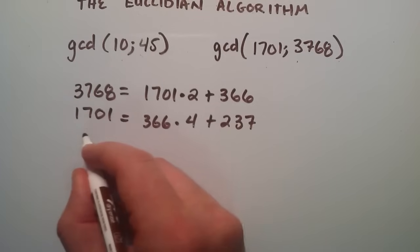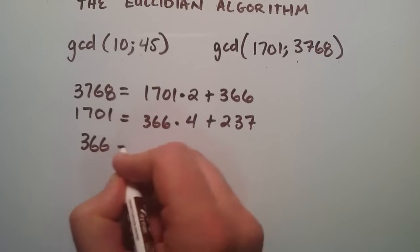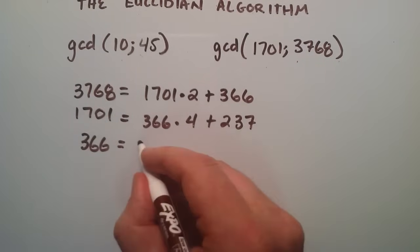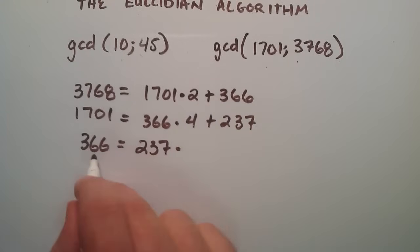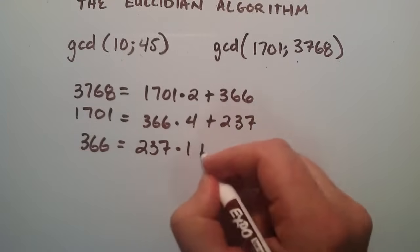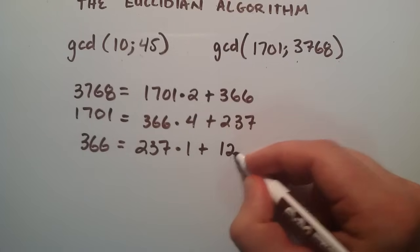Moving the 366 to the left hand side now. 237 where the 366 was. So 237 goes into 366 one time, with a remainder of 129.